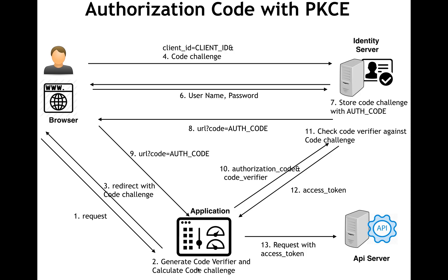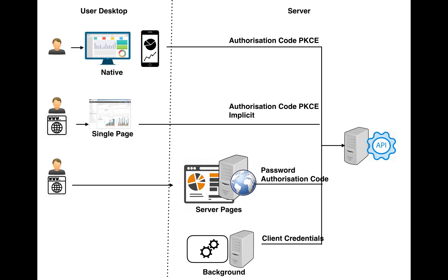At this point the user is authenticated. The application then takes the code verifier and sends it to the identity server along with the auth code. On the server side, the code verifier is hashed and compared against the code challenge which was stored for that particular auth code. If they match, an access token is issued, and the application accesses the API using that access token. The use of a code verifier removes the necessity of having a client secret.